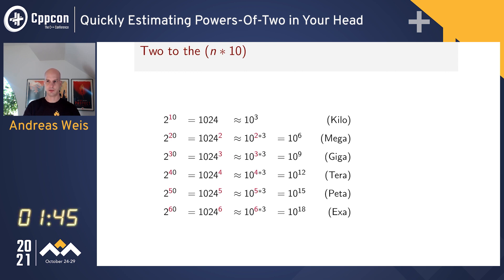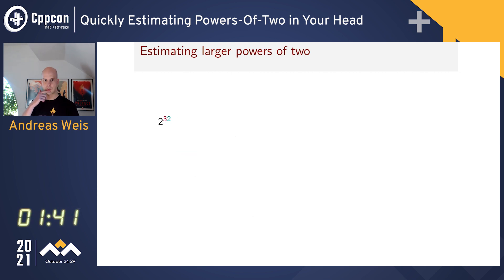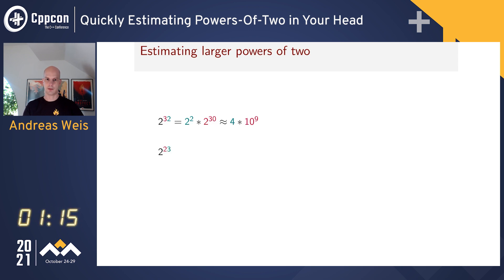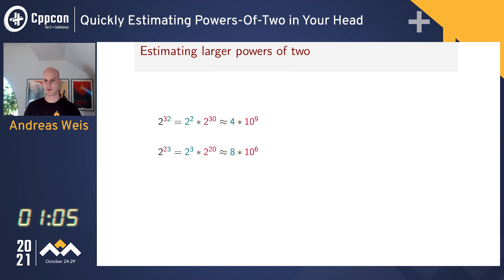Now let's put those together with examples. For 2^32: split the tens and the ones — the ones give 2^2 = 4, the tens give 2^30 ≈ 1 billion, so the result is roughly 4 billion. For 2^23: the ones give 2^3 = 8, and 2^20 is roughly 10^(2×3), so roughly 1 million — making the result about 8 million.